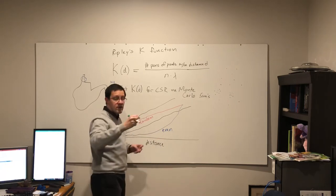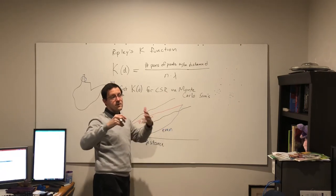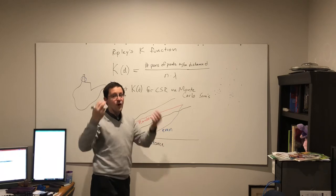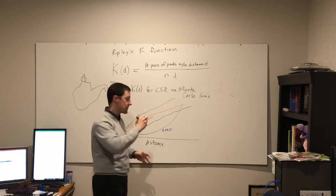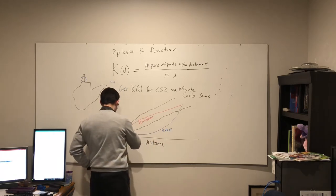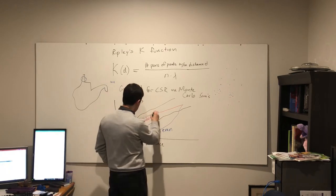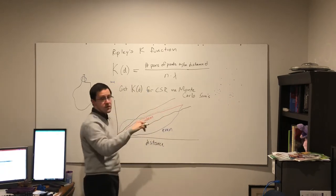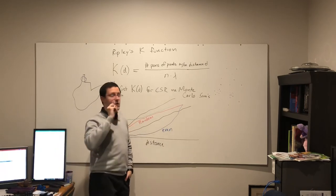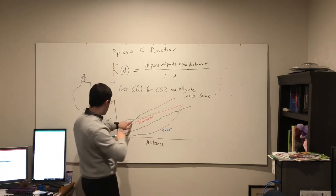So those points are too spread apart for it to register as random. On the other hand, if I have too many points that are within that distance threshold, it's going to go up quickly and then it can rejoin random.